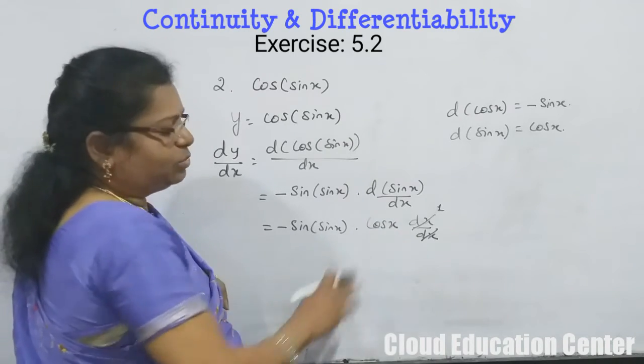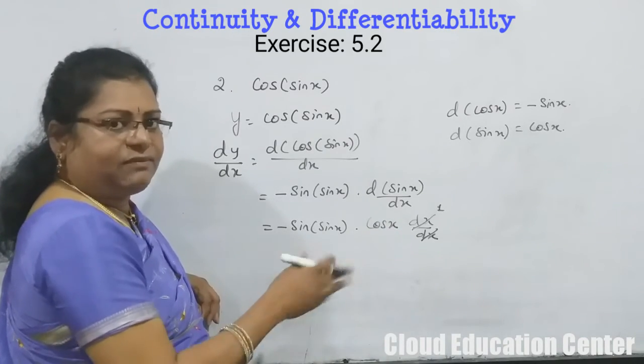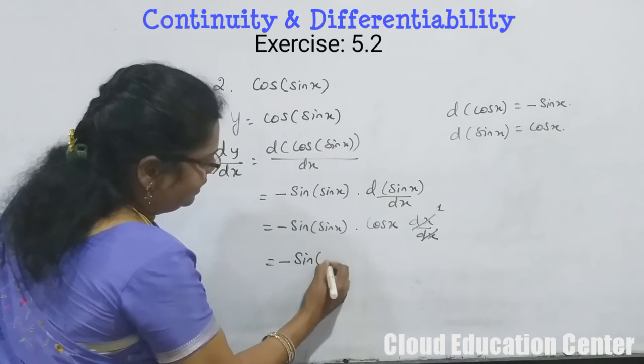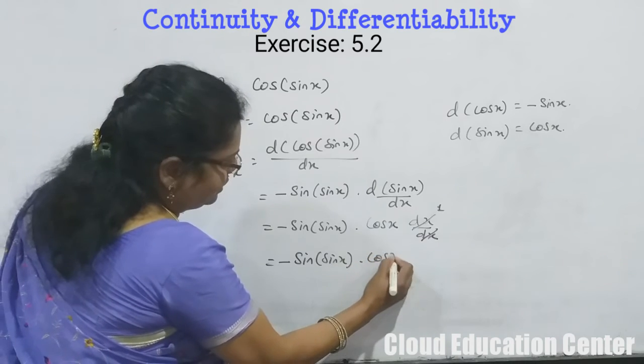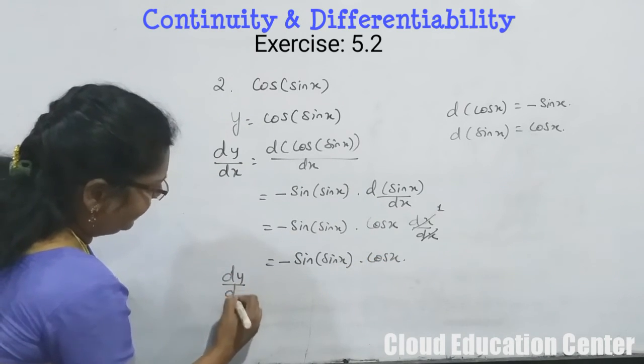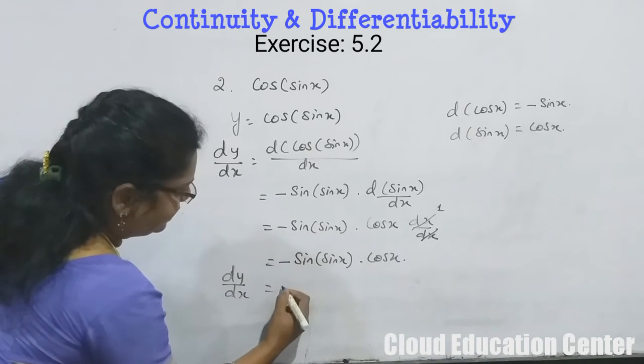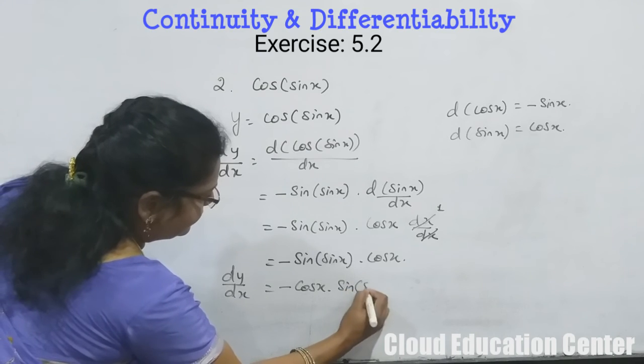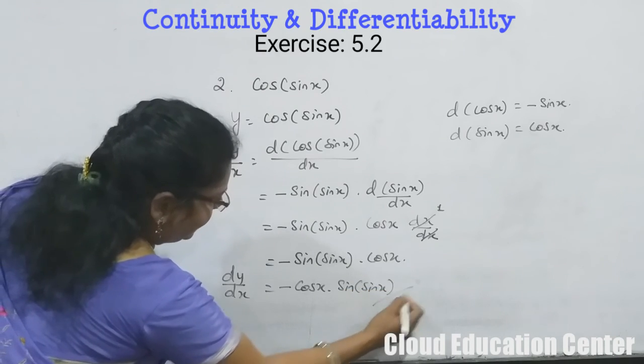If at all you want to do it, you can do. It will get cancelled, we will get 1 only. So the final answer will be -sin(sin x) into cos x. Otherwise, we can write dy/dx, bring cos x in the front, -cos x into sin(sin x). That's it.